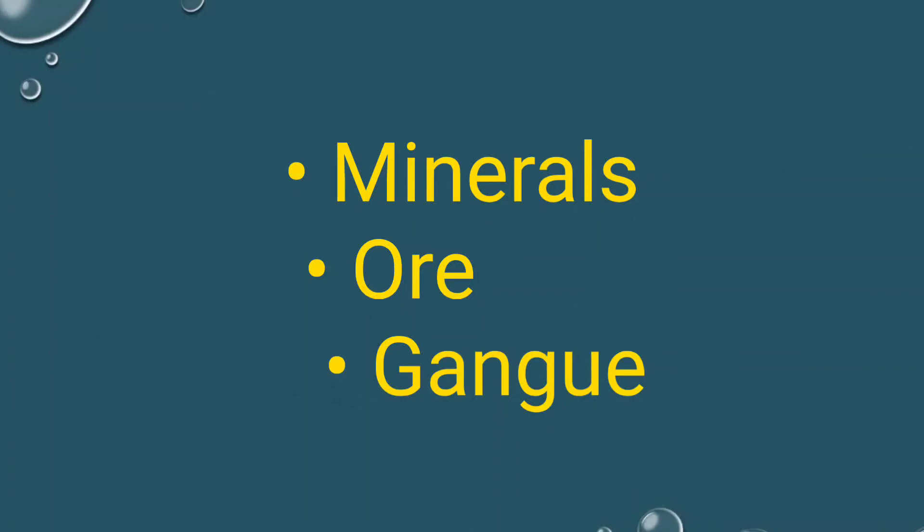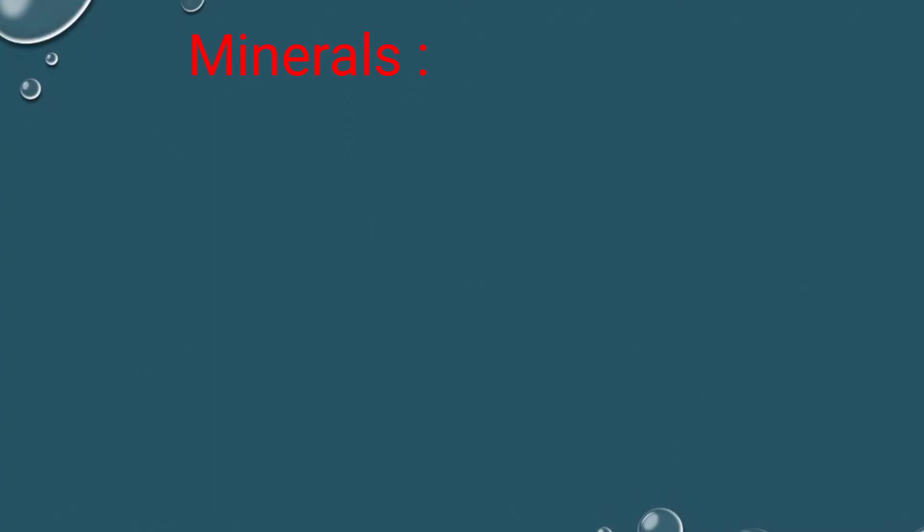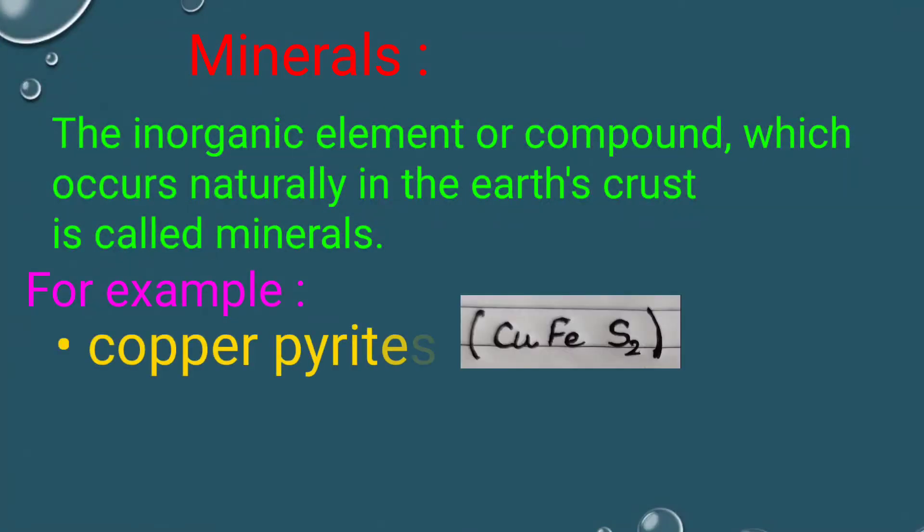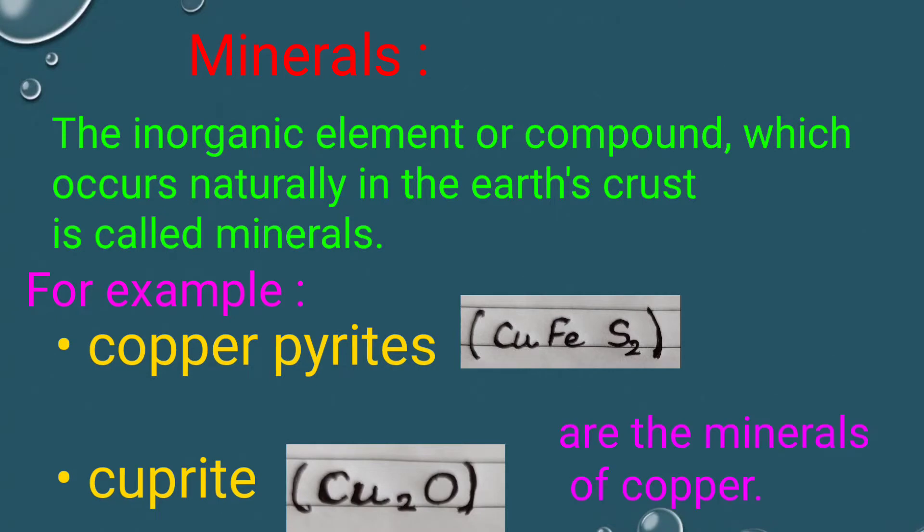Hello friends, welcome to my channel. In this video, we discuss minerals or gangue. Minerals: the inorganic elements or compounds which occur naturally in the Earth's crust are called minerals. For example, copper pyrites and cuprite are minerals of copper.